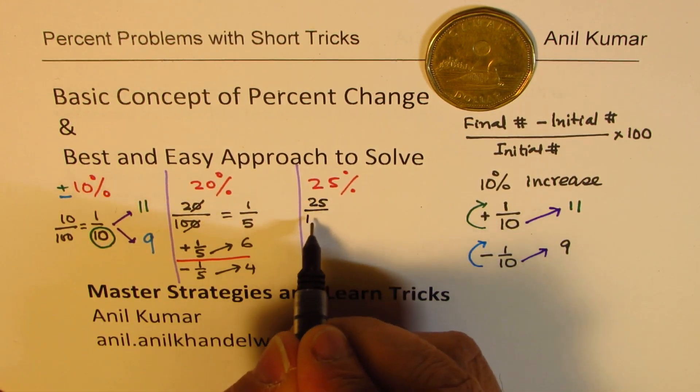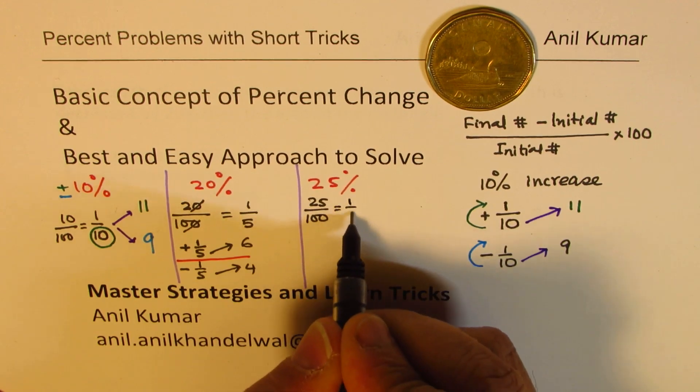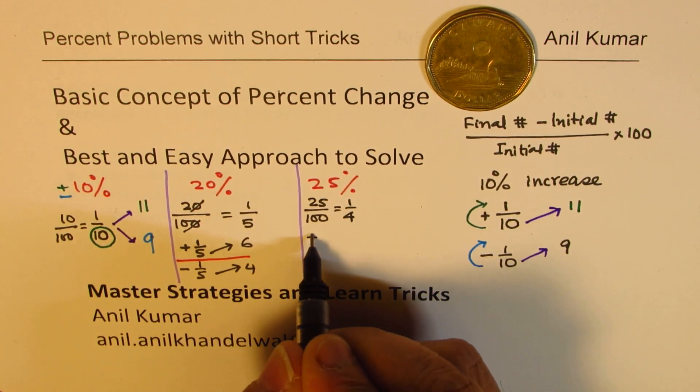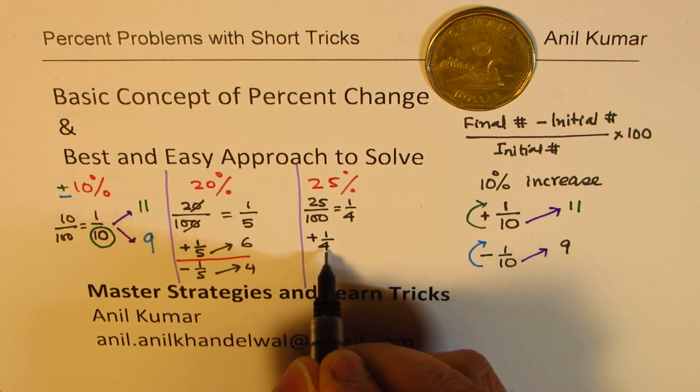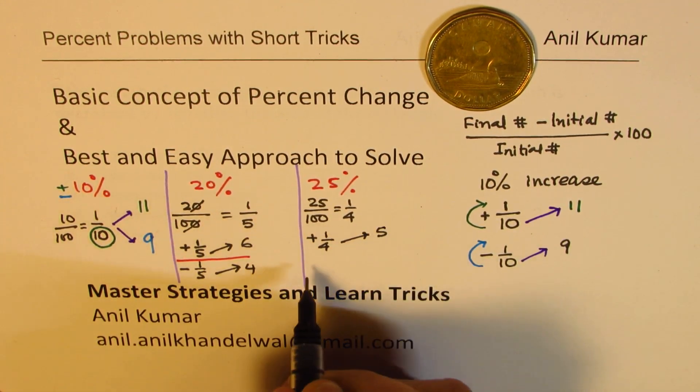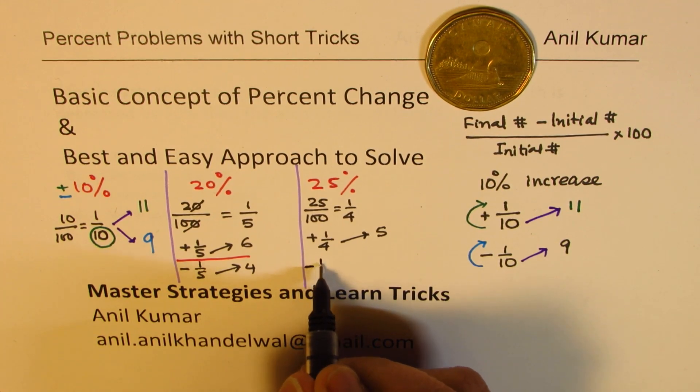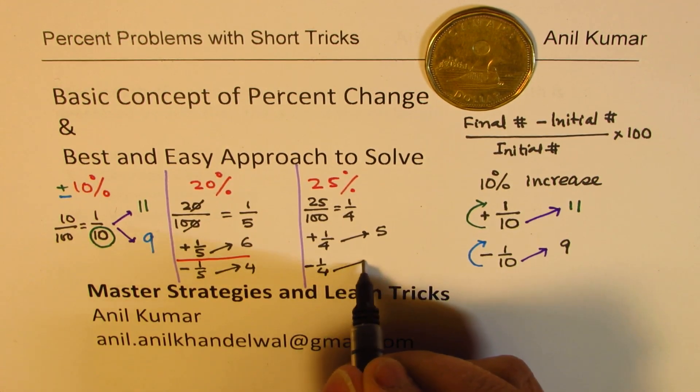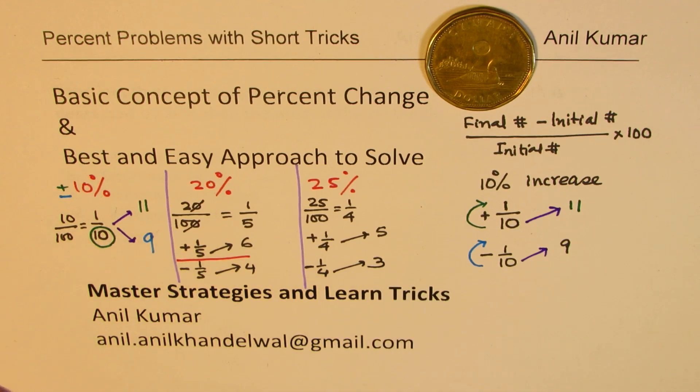Similarly, 20% means 20 over 100 which is 1 out of 5. Increase by 20% means 5 changes to 6. Decrease by 20% means 5 changes to 4. And 25% means 25 over 100 which is 1 out of 4. Increase means 4 changes to 5, decrease means 4 changes to 3.